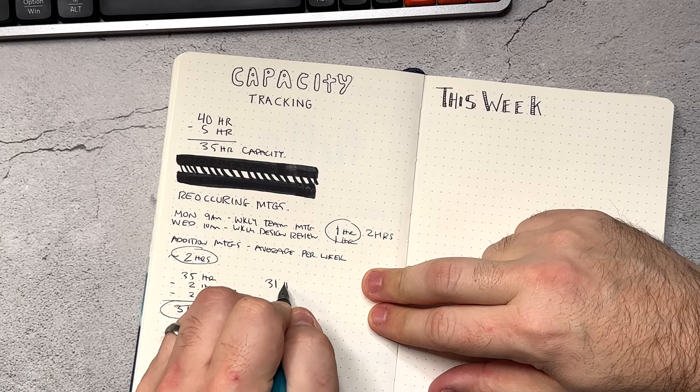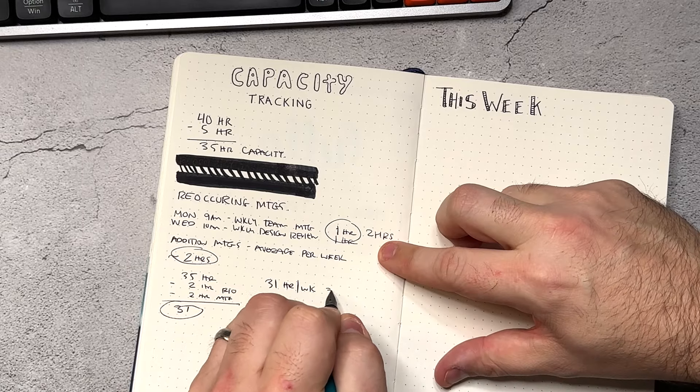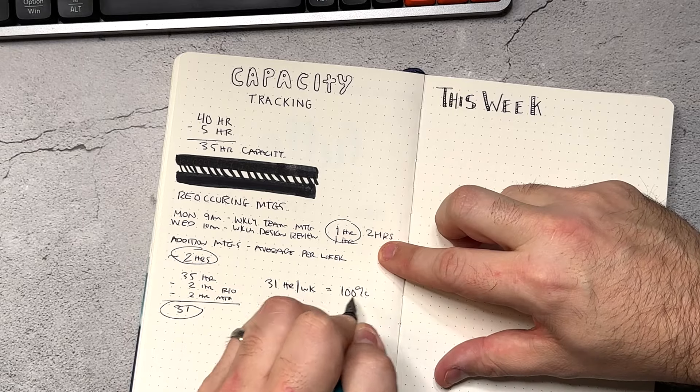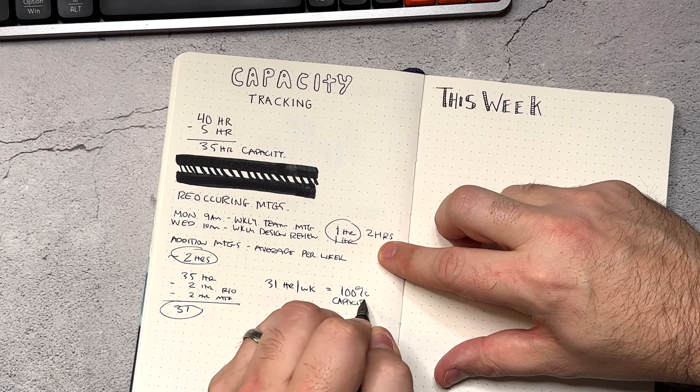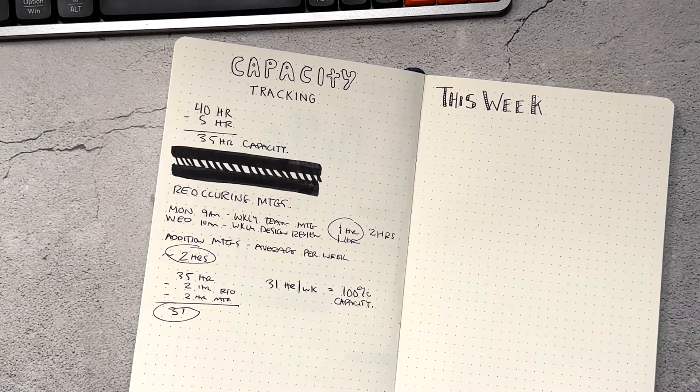This is now your new base. 31 hours a week is 100% capacity for you. The next thing we're going to talk about are the actual capacity numbers that we're going to use.